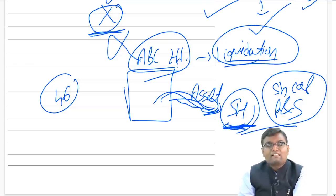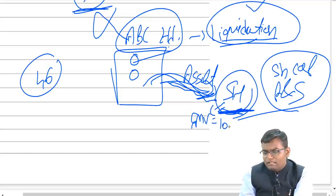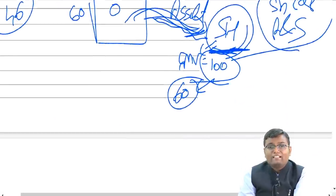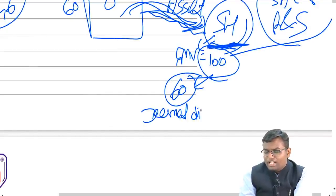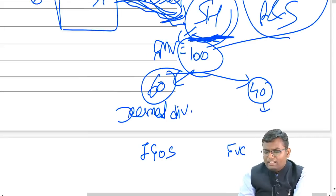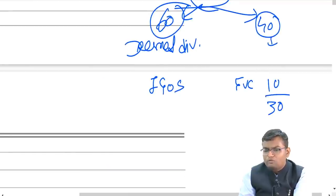For the shareholder receiving the asset, the fair market value is split into two parts. The portion up to the amount of reserve and surplus is deemed dividend, taxable under income from other sources. The balance is treated as sale value for capital gain. From that, deduct the cost of purchasing the shares, and the balance is capital gain. For example, FMV of Rs. 100, reserve and surplus Rs. 60, share capital cost Rs. 10: deemed dividend is Rs. 60, sale value is Rs. 40, capital gain is Rs. 30.